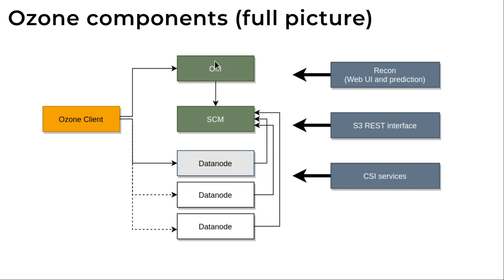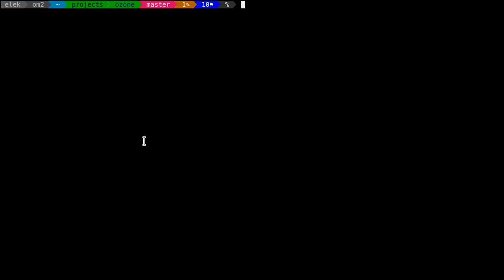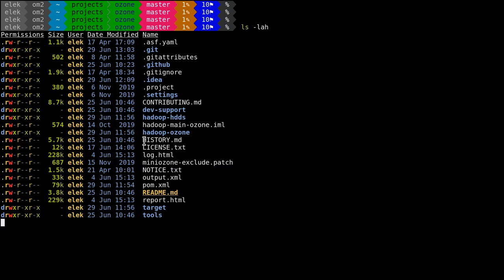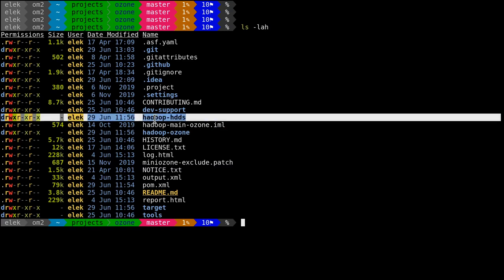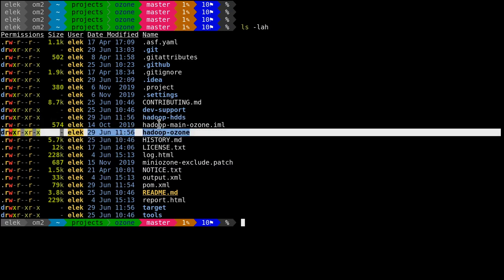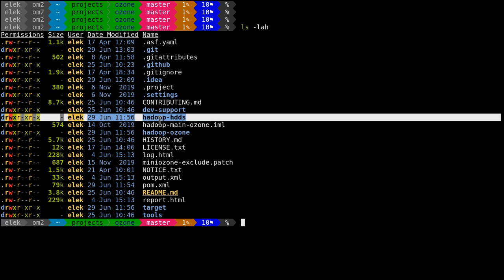This is the typical client workflow: the client connects to one of the primary servers, which can communicate with the other one, and we have the data nodes. We have separated projects for separate services like the web UI or the S3 interface. If we check out the Git repository, we have two main directories — 'ozone' and 'hdds' — for the two layers. Based on the original idea they can be released separately, but today we release them together with exactly the same version.